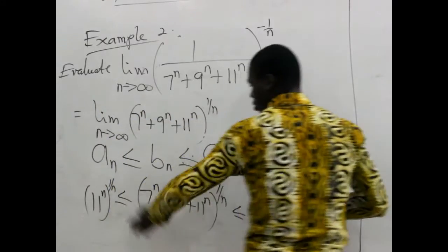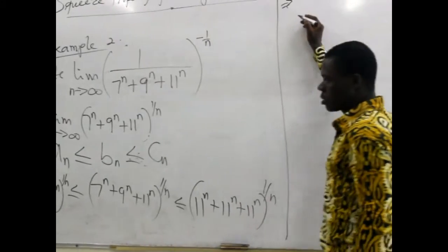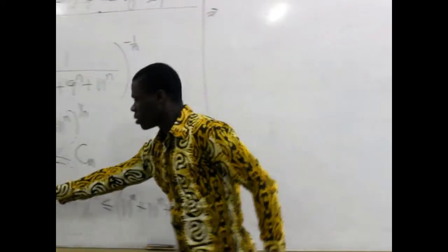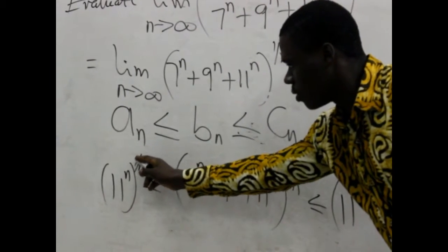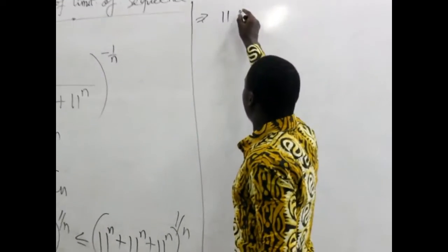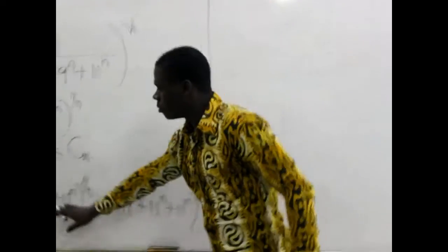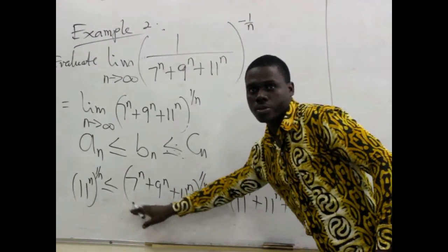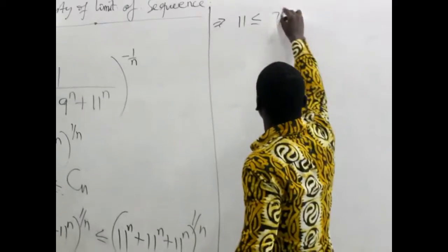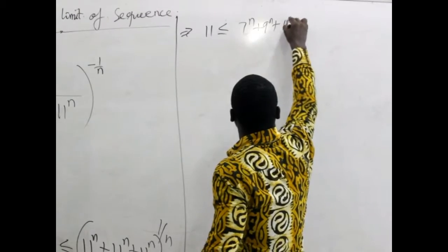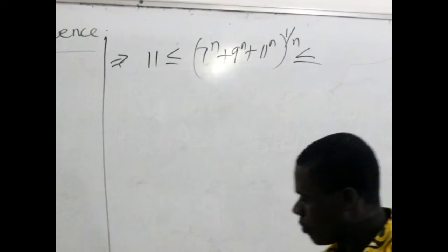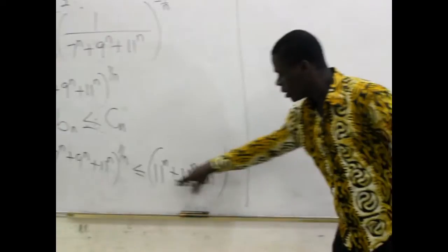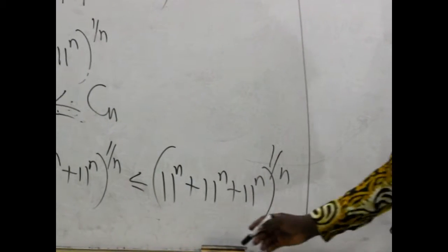Let's simplify. Since we are raising a power to another power we multiply: n times 1 over n gives n over n which equals 1. So the lower bound simplifies to 11. On the right side, for 7^n + 9^n + 11^n we keep that as written. For the upper bound, 11^n appears three times, so we factor out 11^n, giving 11^n times 3, all raised to the power 1 over n.